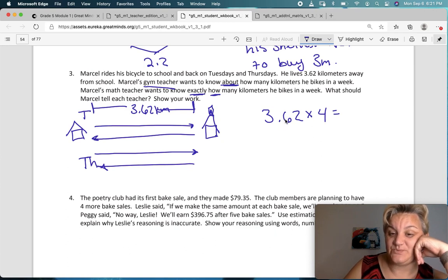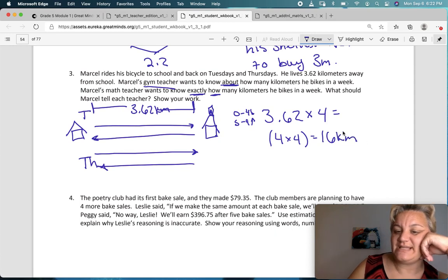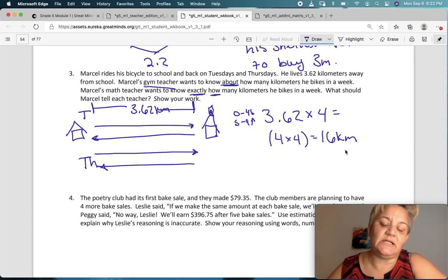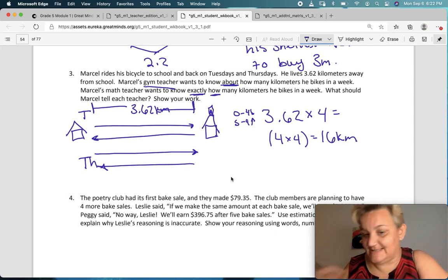So, let's find out. We know that he makes the trip one, two, three, four times. So, 3.62 times 4. If we're going to estimate, let's round this to the nearest whole number. We look at the tenth and because that's a six, remember, zero to five rounds down and five to nine rounds up. That's a six, so this is definitely going to round to a four, so that would be 4 times 4 equals about 16 kilometers. So he can tell the gym teacher, I bike about 16 kilometers a week.